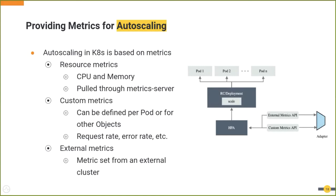Apart from resource metrics, certain other metrics can be used for pod scaling. Metrics that represent the state of the service — like request rate, error rate, and average latency — can also be used to scale a cluster. These are known as custom metrics and are pulled through the custom metrics API. Custom metrics can be defined either per pod or per a different object like a service or ingress. The custom metrics API is usually implemented by a third-party adapter, and the autoscaler fetches metrics from the adapter, which is responsible for computing and presenting them in a particular format.